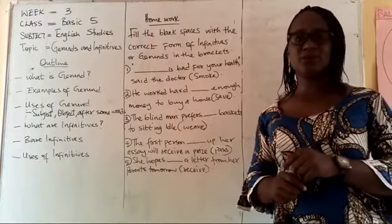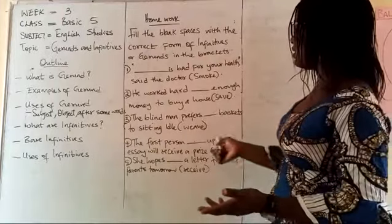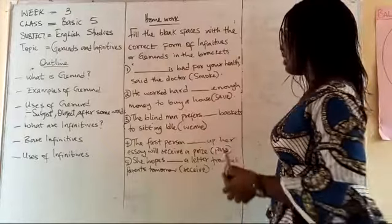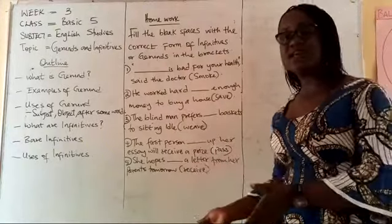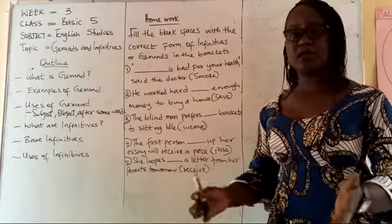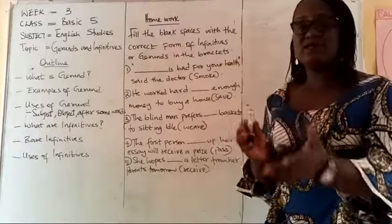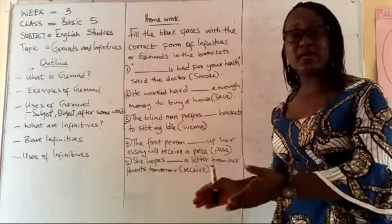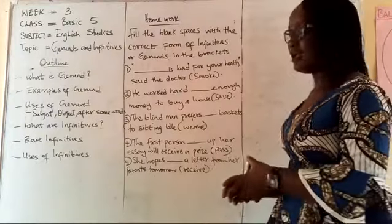I'm giving you that example so you can use it to solve the rest. Look at the next one: 'He won't have vast enough money to buy a house.' Will it be a gerund or an infinitive to fill the blank spaces correctly? You are expected to know the correct form of the word in the bracket. Do that correctly and then submit. Thank you.